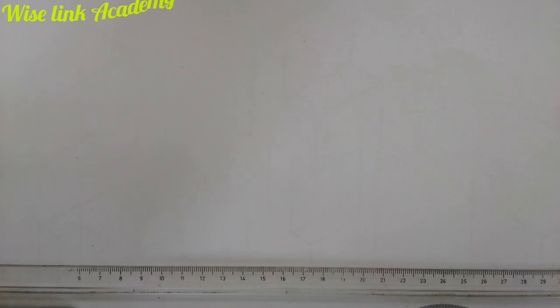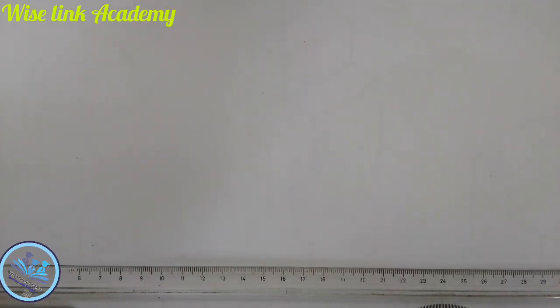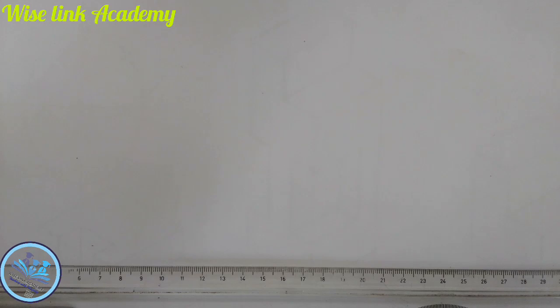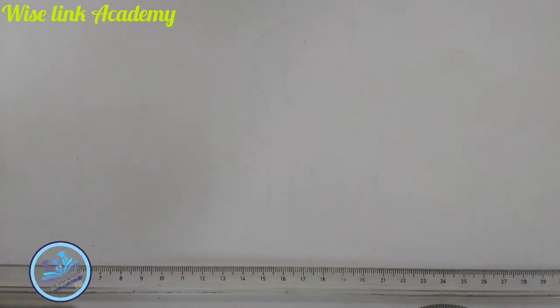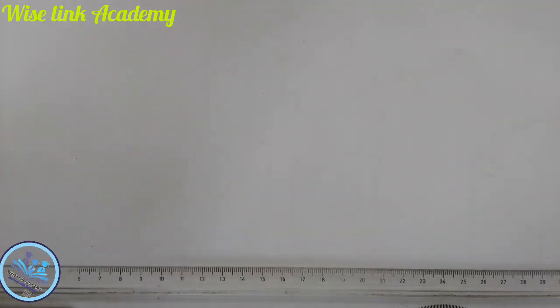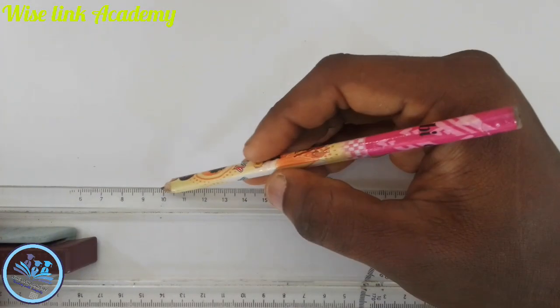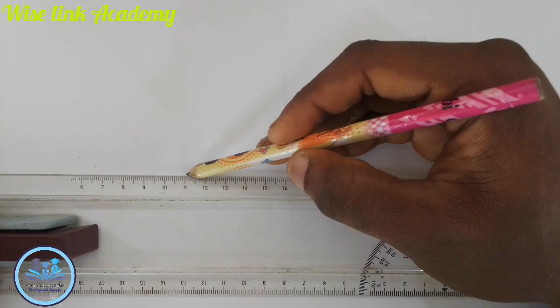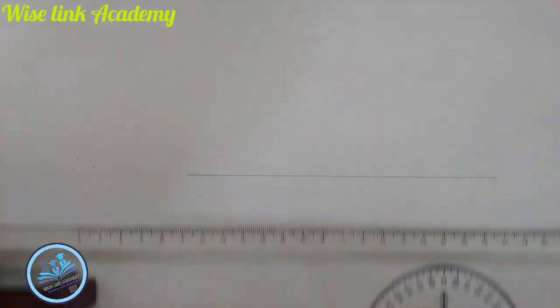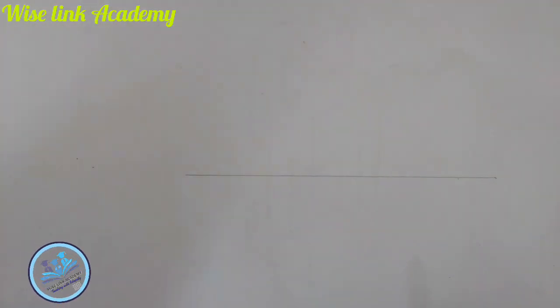Good day everyone, welcome to Wiselink Academy. Today we want to look at how to draw an ellipse using the approximate method. The first thing you do is draw your horizontal line — take your T-square and pencil and draw your horizontal line.